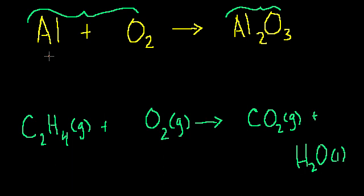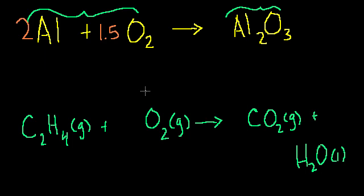I have one aluminum here and two aluminums there, so a simple fix is to put a 2 in front of aluminum on the left. Now I have two aluminums on both sides — the aluminums look happy. Now let's look at the oxygen. Here I have two oxygens on the left-hand side, and on the right-hand side I have three oxygens. If I multiply the oxygen by 1.5, then 1.5 times 2 is 3, so now I have three oxygens on both sides of this equation and two aluminums on both sides.